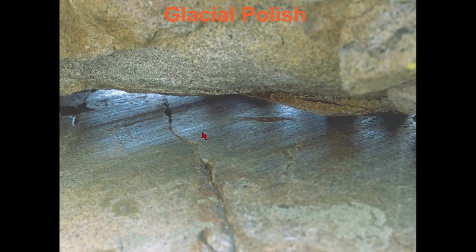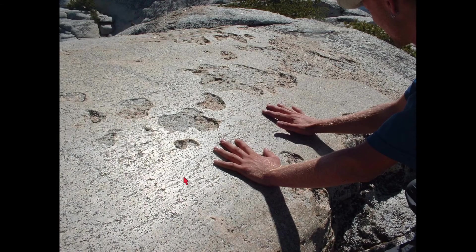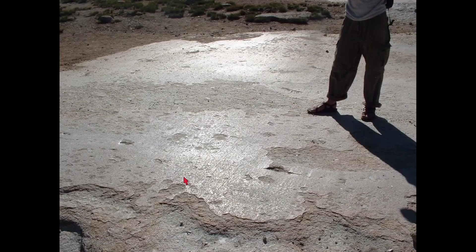A close-up of glacial polish showing striations — the technical term for parallel scratch marks that tell us which direction the glacier was flowing. These striations also confirm something is a glacial erratic, since the glacier must flow against the rock to create them. This is at Tuolumne Meadows at the foot of Lembert Dome.